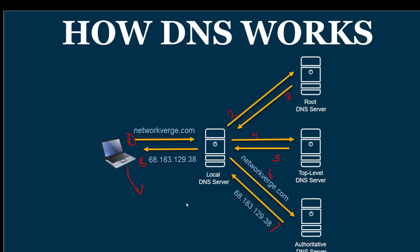DNS maps domain names to IP addresses, making it easy for humans to browse the internet. It would be impossible for us to remember the billions of IP addresses on the internet — but that's how computers talk to each other, using all those numbers. Humans need easy-to-remember names so we can browse and use the web. If you enjoyed this video, please subscribe to my channel — thanks for watching.